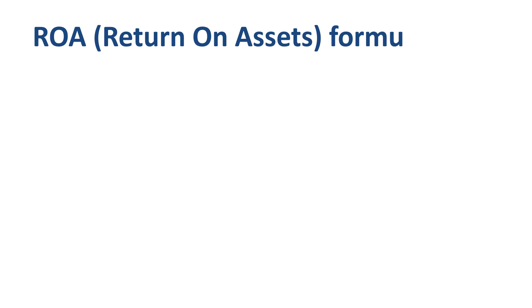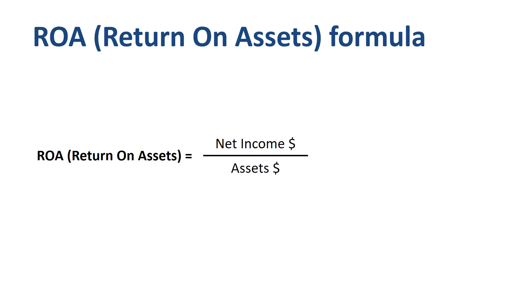ROA, or Return on Assets, is defined as net income divided by assets — in other words, the net profit that a company has generated during a year divided by the book value of the assets the company owns on the balance sheet date.